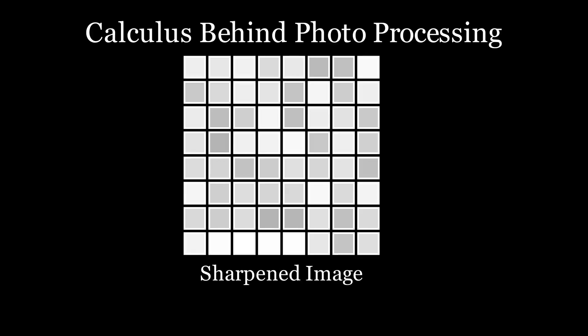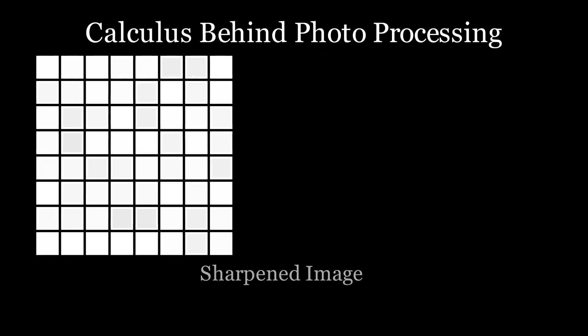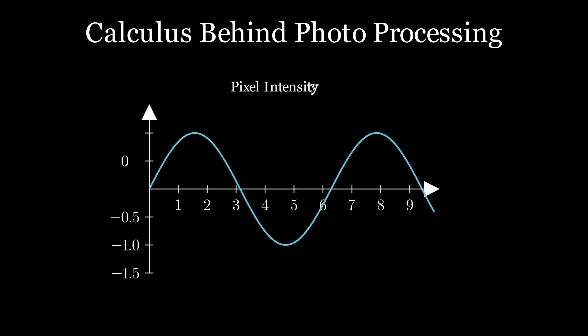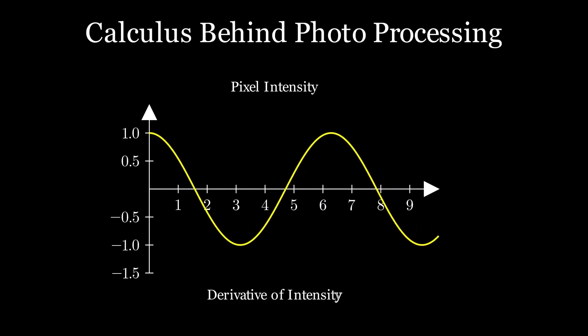By detecting changes in brightness between pixels, calculus helps us define the edges in an image, turning this blurry grid into a clear photo. This graph shows pixel intensity across the image. Smooth changes represent flat areas, while sharp changes represent edges. The derivative of this graph highlights where intensity changes the fastest. These are the edges of the image.